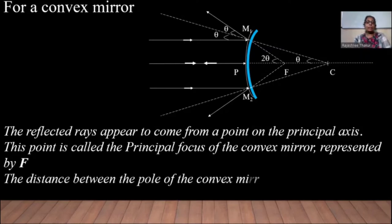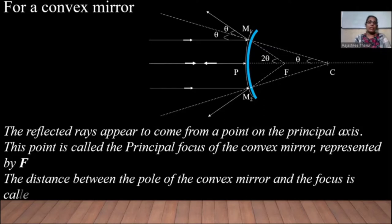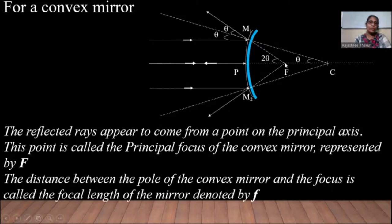The distance between the pole and the focus of the convex mirror — this is the pole and the focus of the convex mirror — that distance is called the focal length of the mirror, and it is denoted by small f.